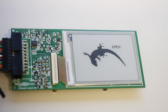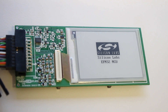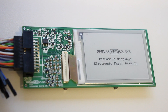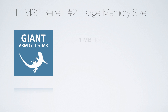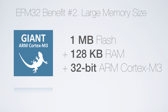In addition, you also need memory and processing power to render and store images. The EFM32 Giant Gecko comes with up to 1MB of flash and 128KB of RAM, and includes the powerful 32-bit ARM Cortex-M3 CPU.